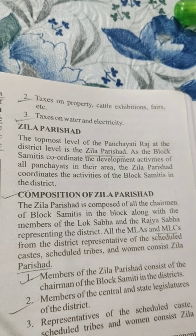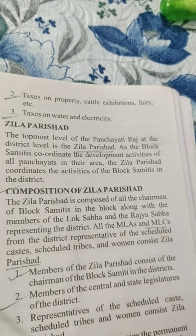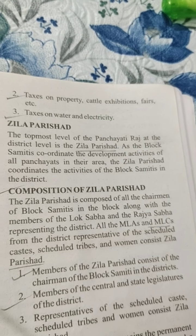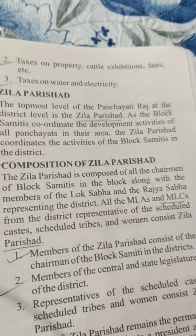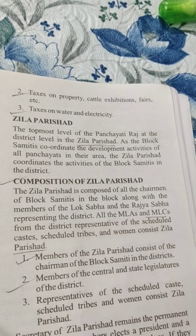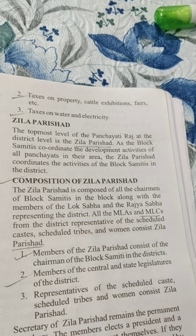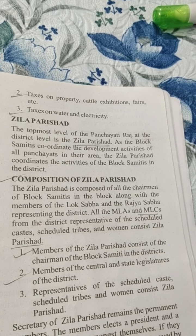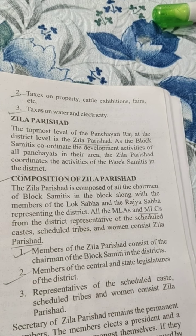Composition of Jilla Parishad: The Jilla Parishad is composed of all the chairmen of Block Samitis in the district, along with members of Lok Sabha and Rajya Sabha representing the district, all MLAs and MLCs from the district, and representatives of the Scheduled Castes, Scheduled Tribes and women.